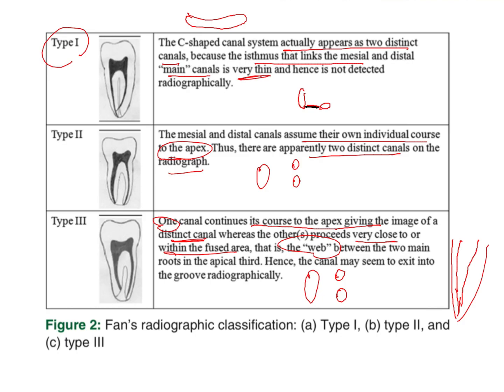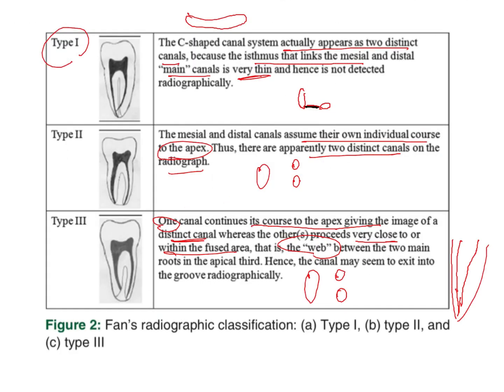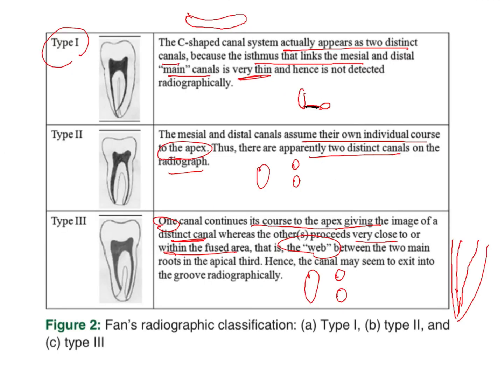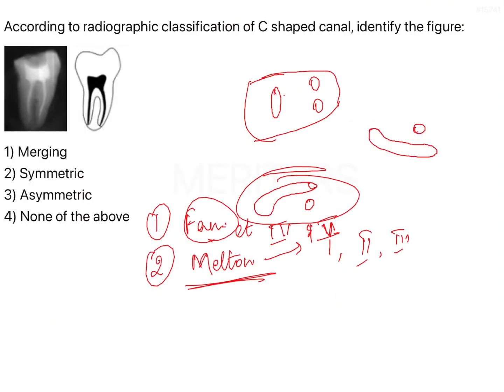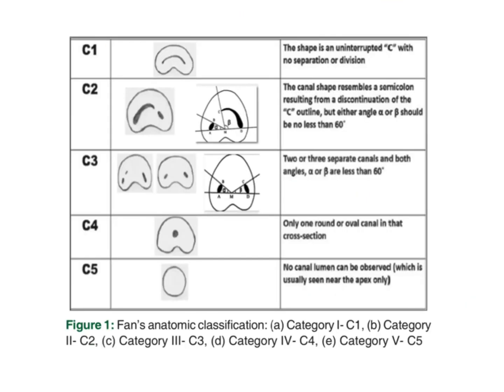As you can see in the question, type 1 would be asymmetric, type 2 would be symmetric, and type 3 would be merging — because these canals merge towards the apex. That is why type 3 is called merging.